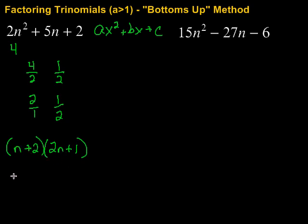If we do that, we would have N times 2N, which would be 2N squared. Then N times 1, so that would be plus N. 2 times 2N would be plus 4N. And then 2 times 1 is 2. Combine like terms here and we do indeed end up back where we started. What a deal. Sure beats guessing and checking.